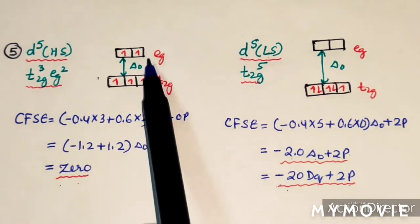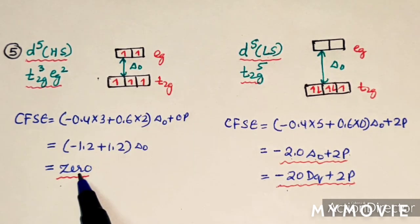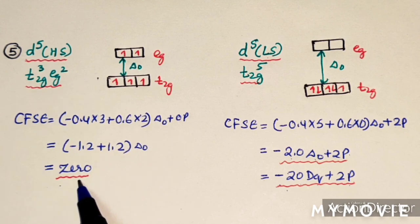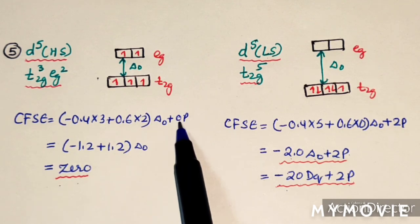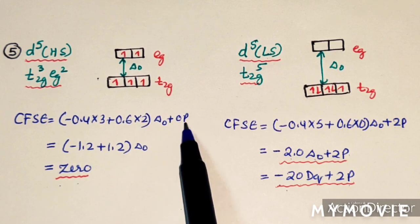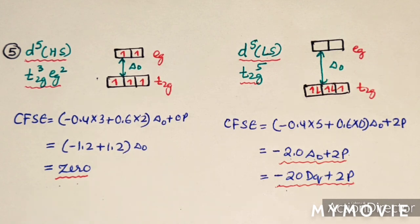For the half-filled configuration (D5 high spin), the CFSE is 0. For the D10 configuration (fully filled), only pairing energy contributes — there is no delta O contribution.